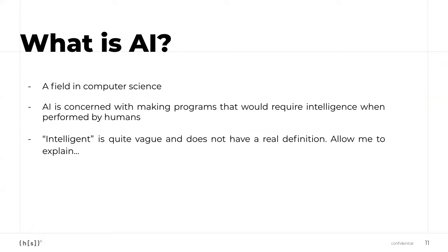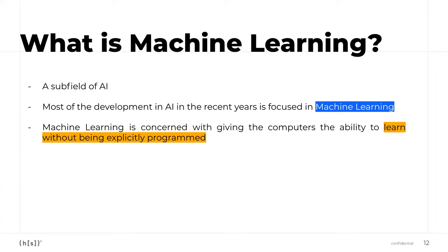That's one reason many companies claim to have an AI department — all your development departments are technically AI departments. Now, what is machine learning? Machine learning is a subfield of AI. The main difference is that in machine learning, we're teaching the computer to make decisions without being explicitly programmed for those decisions. In our even/odd example, we explicitly programmed the if-statement. In machine learning, the machine should handle examples it hasn't been explicitly taught. Most recent AI development focuses on machine learning because it's far more scalable.